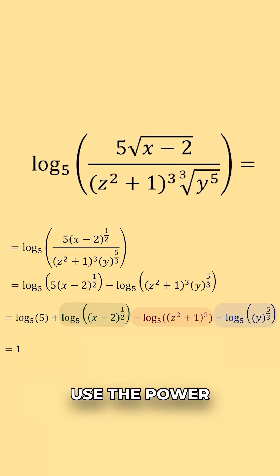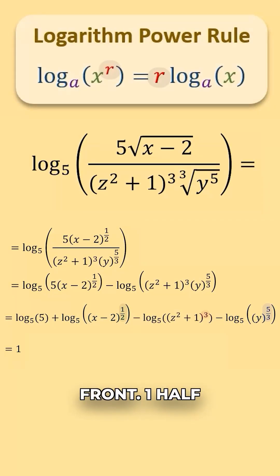For all other logarithms we use the power rule to bring the powers out front. 1 half comes out front here, 3 comes out front here, and 5 thirds comes out front here.